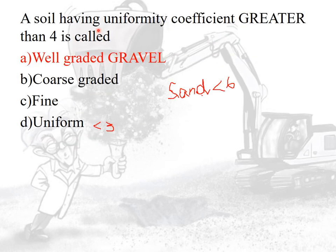A soil having a uniformity coefficient greater than 4 is called well-graded gravel. If it is greater than 6, it is well-graded sand. If it is less than 3, it is uniform soil.